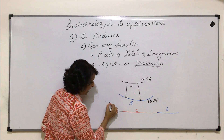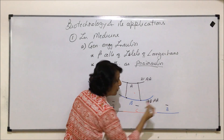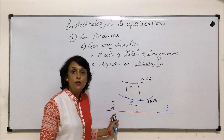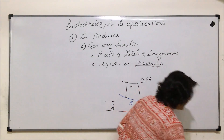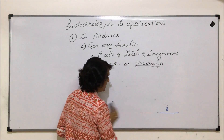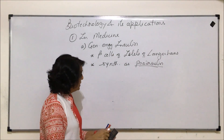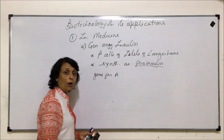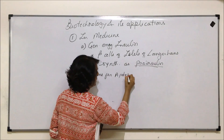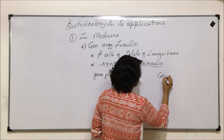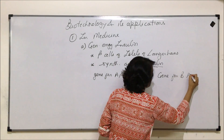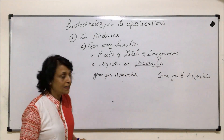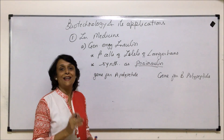What scientists have done is they isolated the gene for polypeptide A and the gene for polypeptide B. Both these genes were first allowed to transcribe.